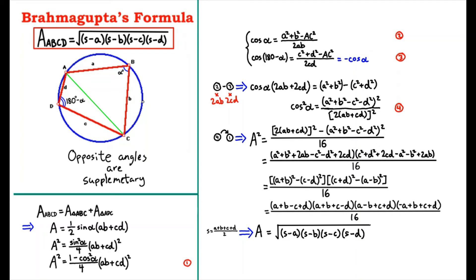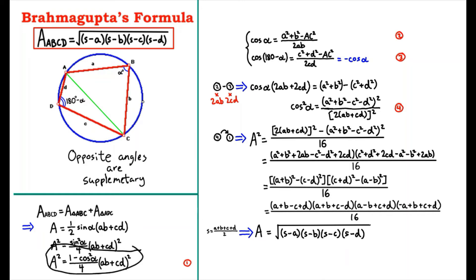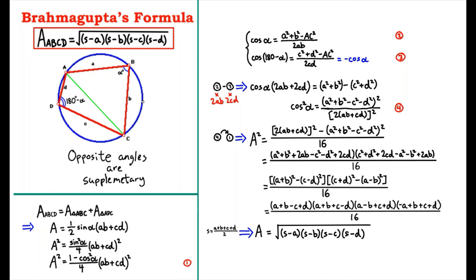Cosine(180 minus alpha) equals minus cosine(alpha). By simplifying, we get that cosine squared alpha equals the resulting expression. Substituting this into the first equation, the area squared equals the simplified expression. Since X squared minus Y squared equals (X plus Y)(X minus Y), we can factor the expression.